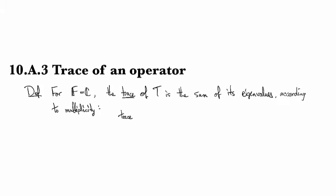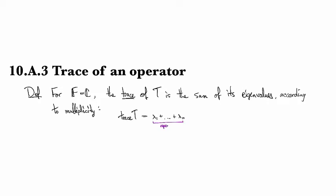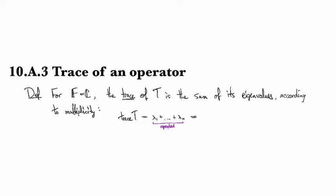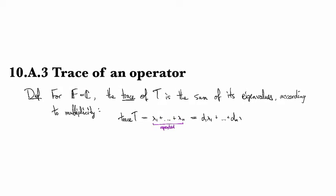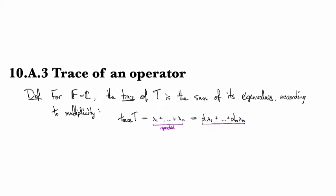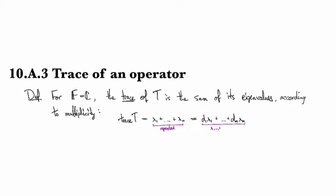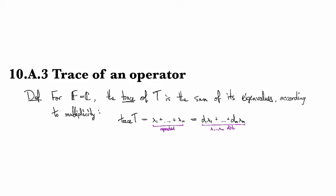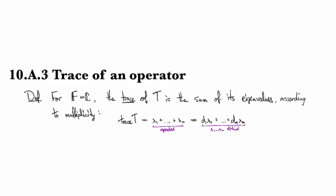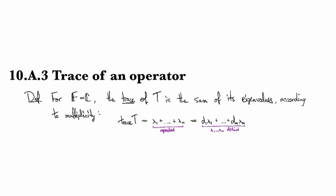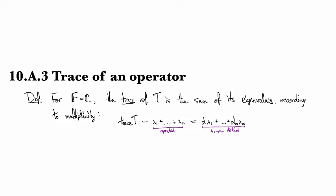So the trace of T can be written as λ₁ + λ₂ + ... + λₙ, where repeated eigenvalues appear multiple times. Alternatively, we can write it as the multiplicity of λ₁ times λ₁, plus ... up through the multiplicity of λₘ times λₘ, where λ₁ through λₘ are all distinct. These are just two different ways of writing the same thing.